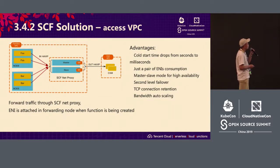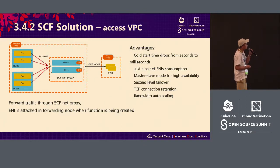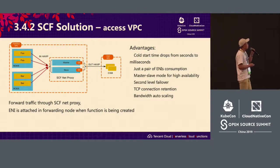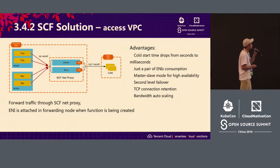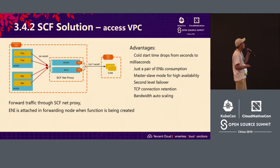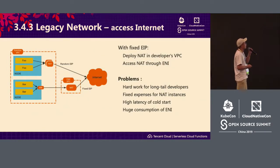Compared to the traditional architecture, the key difference is that when creating a function or creating the proxy, the previous solutions create ENI and EIP at function creation time. In the SCF architecture, we only need an internal IP. When you run the function, you don't have to create an EIP. That significantly reduces time and reduces errors.